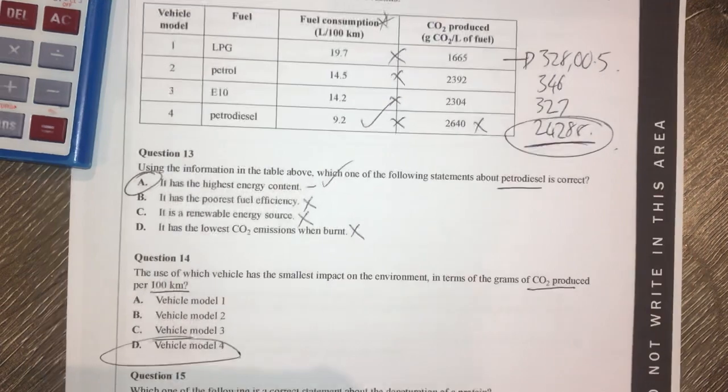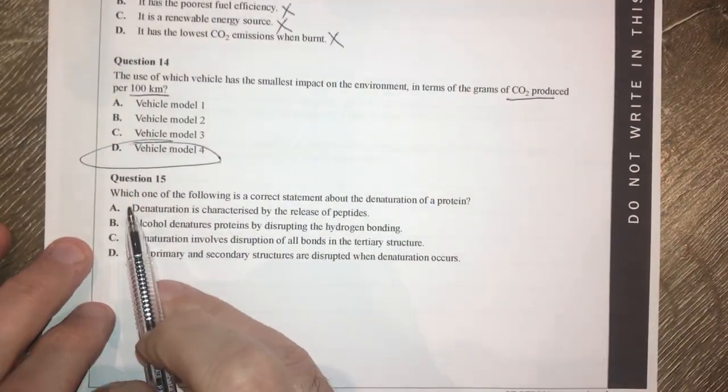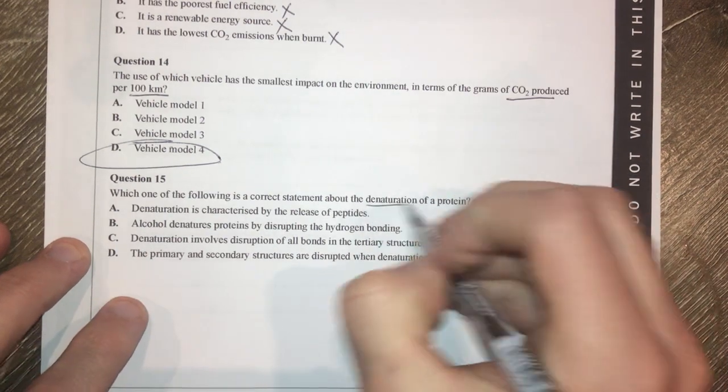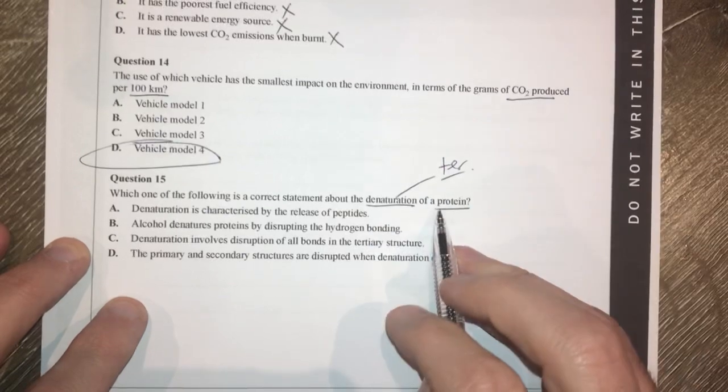Well, that's an interesting one there. Moving on, we've got question 15. Which of the following statements about denaturation of a protein? Denaturation is the disruption of the tertiary structure is correct.